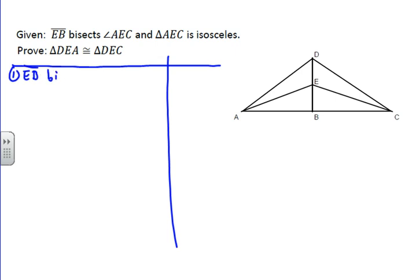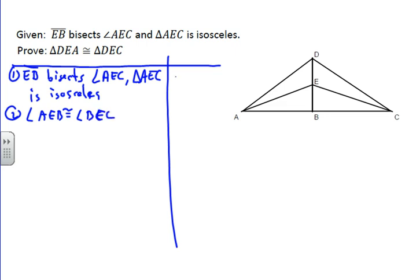Now, anytime you see the word bisects, whether it's bisecting a segment or an angle, you should be thinking about congruent something. That's telling you that something's congruent. In this case, the fact that EB bisects angle AEC tells me that angle AEB is congruent to angle BEC, and that's just by definition of angle bisector. That's a no-brainer on these.